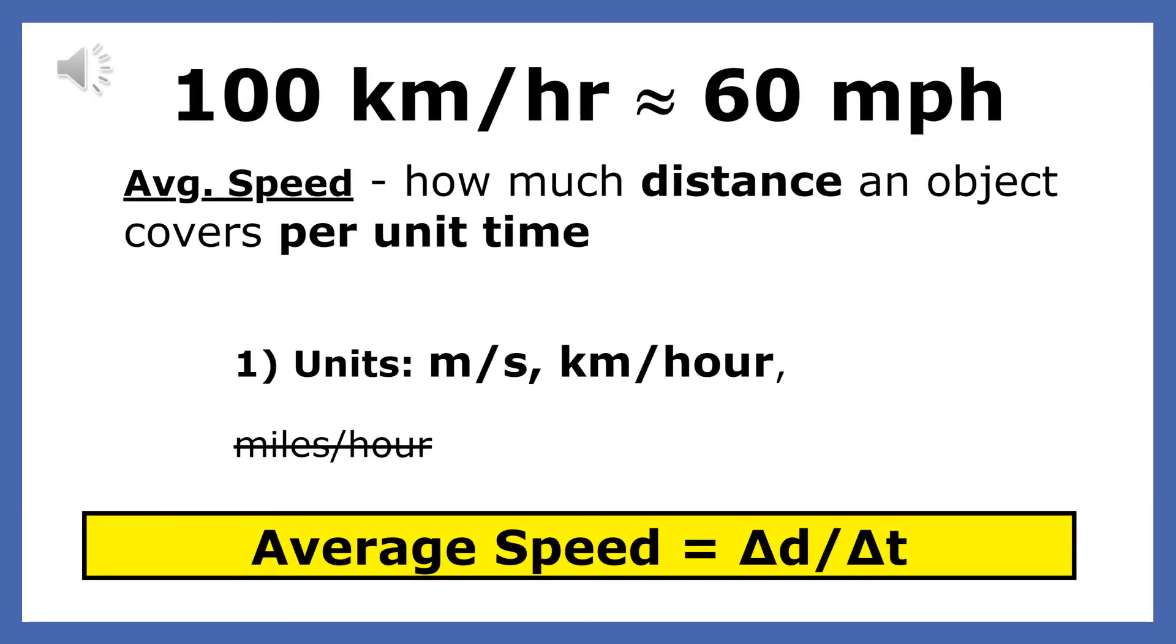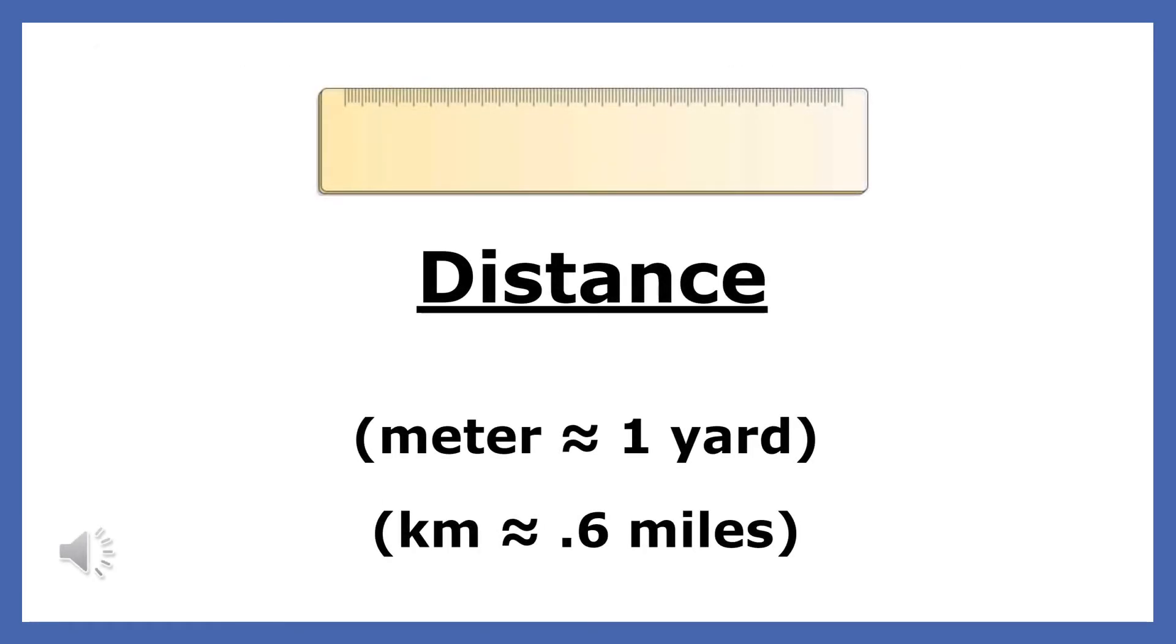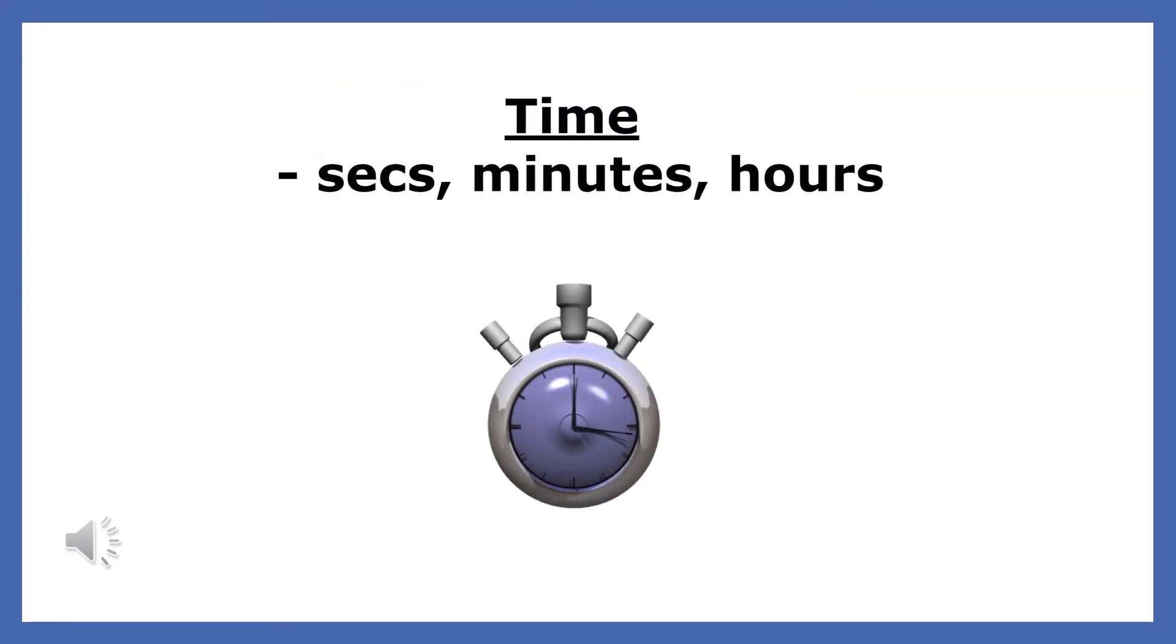As I said before, speed is the distance an object covers per unit time. In this class, we will mainly use meters per second or kilometers per hour. Average speed can be found by dividing the distance traveled by the elapsed time. A meter is about 3 feet or a yard, and a kilometer is about 0.6 miles. Time is typically measured in seconds, but it can also be measured in minutes or hours.